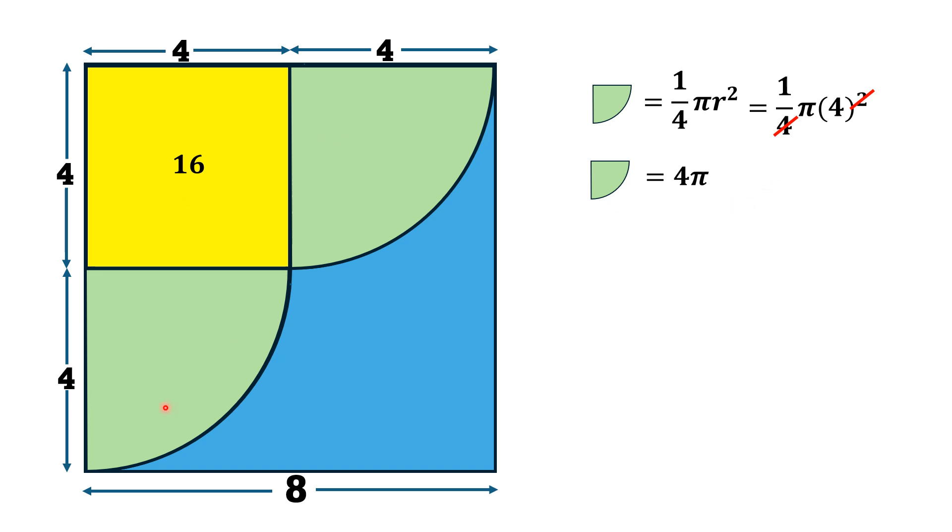Since these are two quarter circles having radius equal to 4 units, area of this quarter circle is 4π and in the same manner area of this quarter circle is 4π.